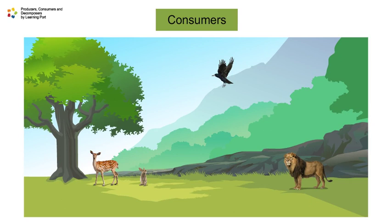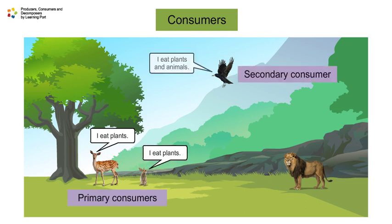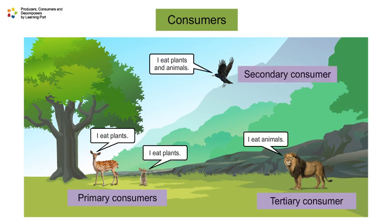Consumers are organisms that eat other organisms. There are three types of consumers: primary consumers, secondary consumers, and tertiary consumers.